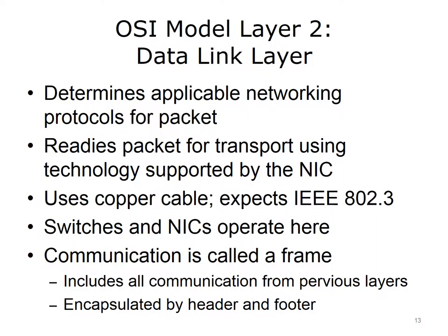OSI model layer 2, the data link layer, determines applicable networking protocols for a packet. Layer 2 services ready the packet for transport using whatever technology the NIC supports — examples include Ethernet, wireless, fiber optic, or a combination of these technologies. The computer's NIC may use copper cable and expects communication encoded according to the Ethernet standard, the IEEE 802.3 standard. Switches and NICs are examples of devices that operate at layer 2. Media access control, or MAC, addressing applies, and MAC addresses are used for communications between layer 2 devices. Note that the communication is a frame at this level, which includes all communication received from layers 7 through 3 and is encapsulated by a header and footer.